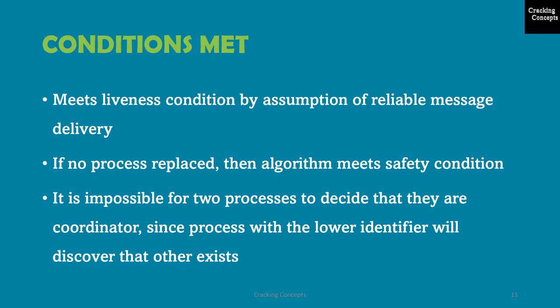In the previous video on the ring algorithm, we saw that there are two conditions that need to be satisfied by an election algorithm: safety and liveness. We need to check if both properties are satisfied here. This algorithm clearly meets the liveness condition by the assumption of reliable message delivery. And if no process is replaced, the algorithm meets the safety condition — it is impossible for two processes to decide they are the coordinator, since a process with a lower ID will discover there exists a process with a higher ID and agree to it.